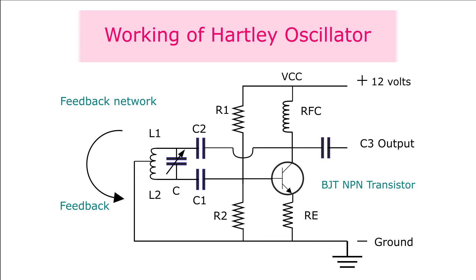When L1 is fully charged, it then goes into discharge and this discharge returns back to the capacitor C and charges it. This back and forth charging and discharging goes on between the capacitor and the inductors to form a sine wave. It changes its direction each time it charges and discharges. The sine wave is less intense and has a negative alternation.